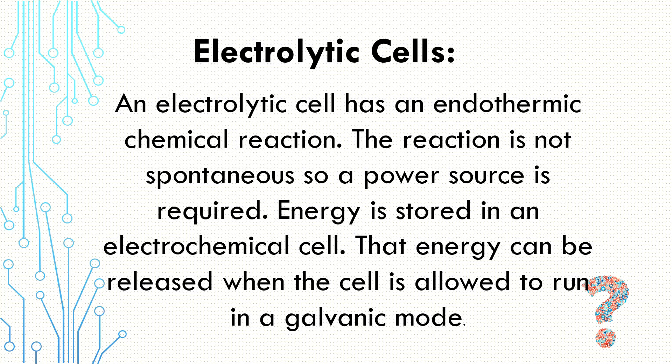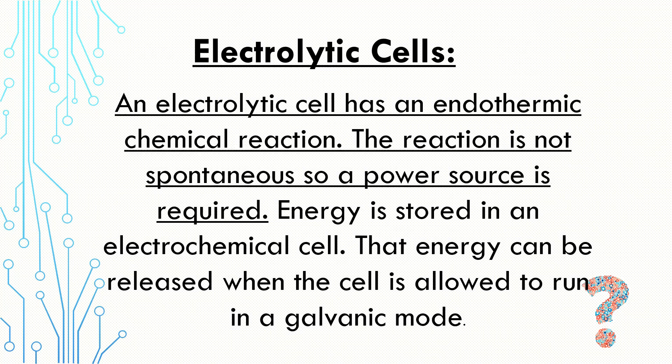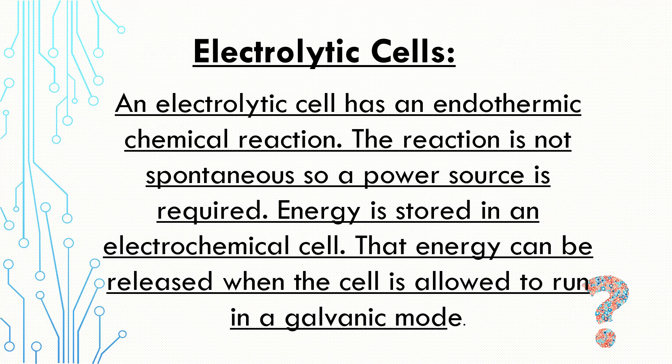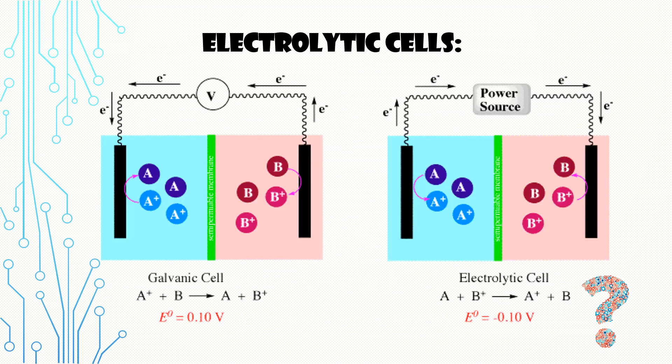Electrolytic cells have an endothermic reaction, where energy is stored in an electrochemical cell, which can be released if it's allowed to run in a galvanic mode. In this case, the molecules in the solution are being broken down so that the metal can be deposited on the surface.